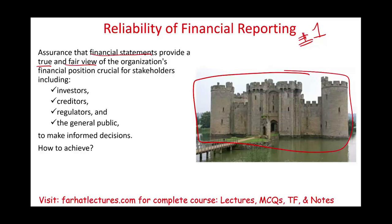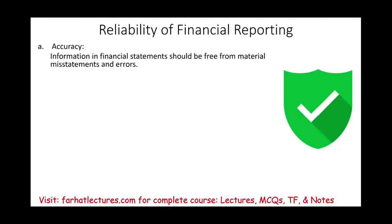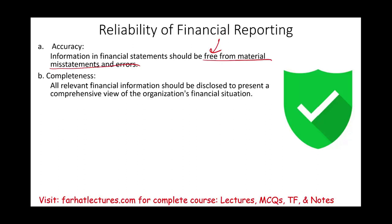How do we achieve reliable financial reporting? Information in financial statements should be free from material misstatements and errors. We double-check information and have controls to ensure accuracy. Completeness means reporting all relevant information for the period — monthly, quarterly, or yearly — disclosing all relevant financial information to present a comprehensive picture of the organization's financial position.